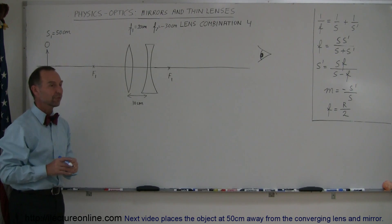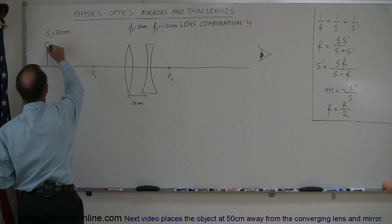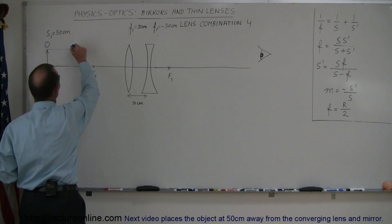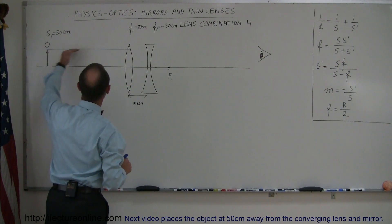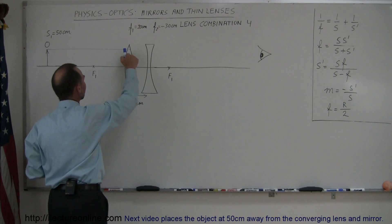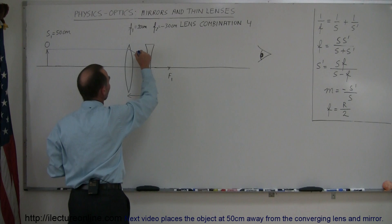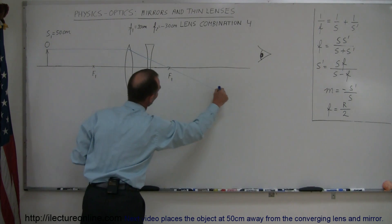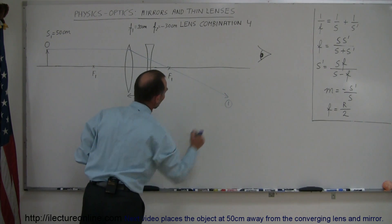I now put the object 50 centimeters away from the first lens and just like before using ray diagrams we can find where the image location is of the first lens by drawing a horizontal ray until we hit the converging lens. The ray will bend to the focal point on the other side then continue on like this. This is ray number 1.